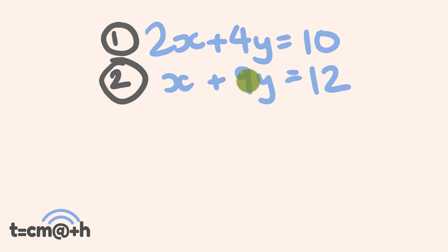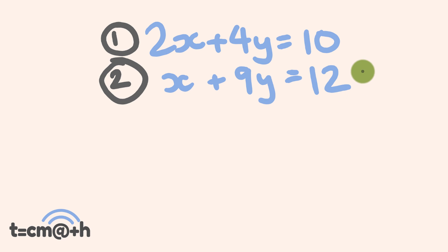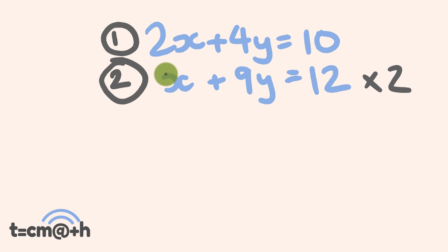So say either we end up with a 2x here, or we end up with matching coefficients in front of the y variables. It's not too bad. I'm going to start off by having a look at the x variables — we have 2x and we have 1x here. So we can multiply this entire equation 2 by 2, and by doing that we're going to end up with a 2x — a matching coefficient in front of each of the variable x. So let's do that.